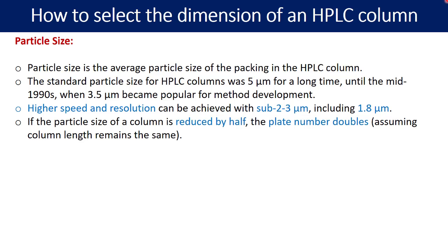If the particle size of the column is reduced by half, the plate number doubles assuming column length remains the same. The plate number is the amount of interaction that is going to happen with the stationary phase. More interaction is possible with the low size particles, and according to one study if you reduce the particle size by half, the plate number gets doubled.